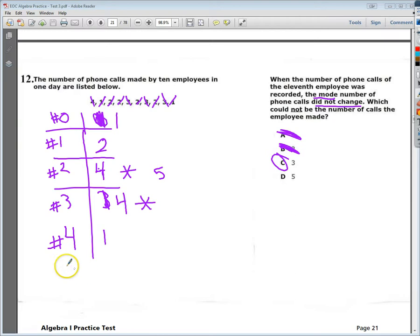For D, by the way, it would just give me another one down here. The mode wouldn't change. So the one that would change the total mode would be the number three. So there it is.